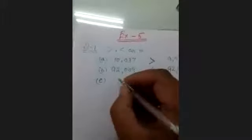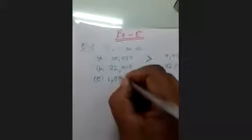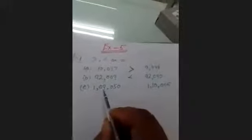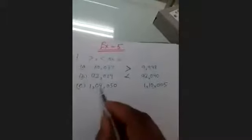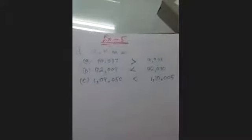Part C: compare 1,009,050 and 1,009,000. The leading place values are the same. Comparing further, the first number has 10,000 while the second has 9,000. So 9,000 is less than 10,000, meaning 1,009,000 is less than 1,009,050.